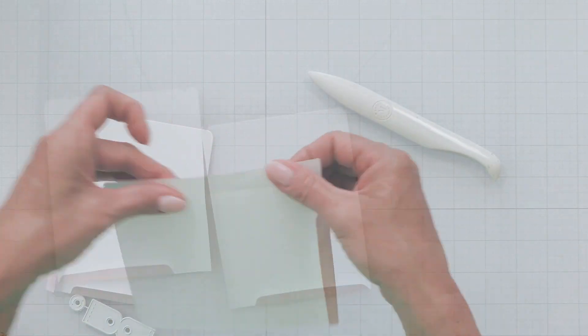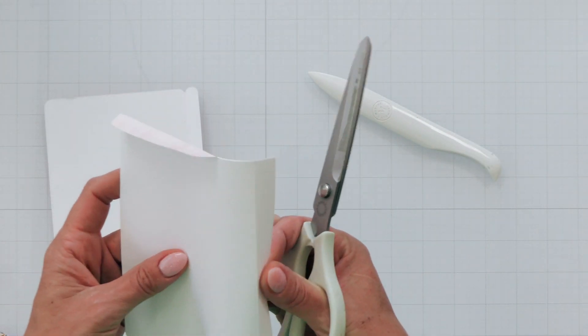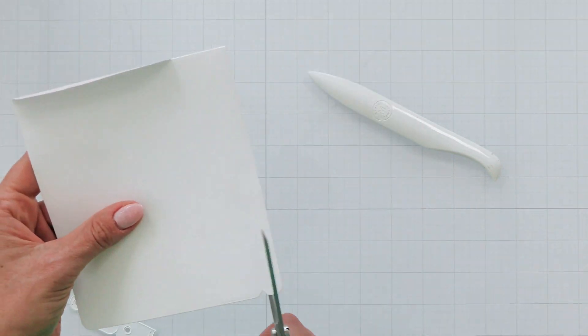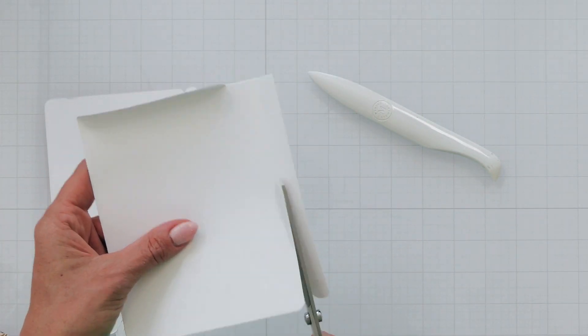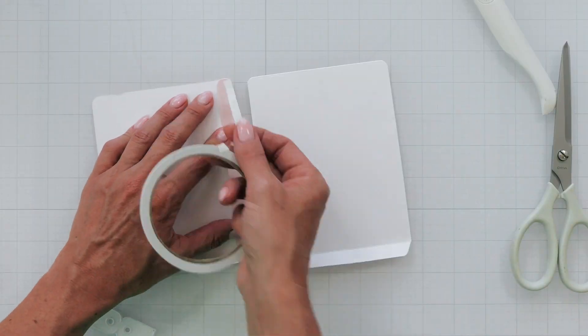Now that you have those scored, go ahead and take one of those pieces and trim off the long flap on one of the sides. This is where you're going to attach the two pieces together.